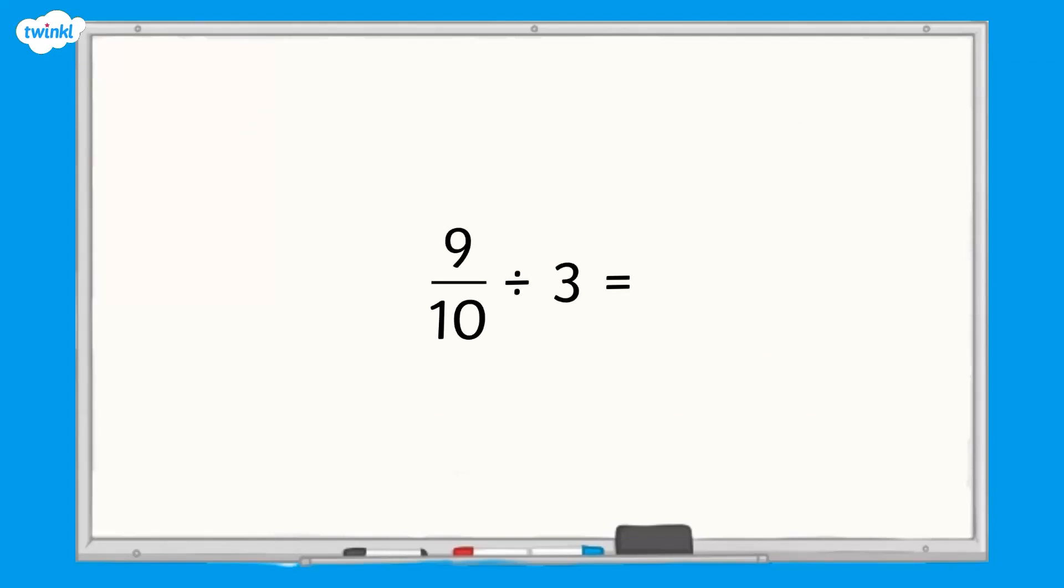There are a few steps to the process, so let's work through it together using the same calculation that we've just completed: 9 tenths divided by 3. Firstly, we need to change the integer, 3, into its equivalent fraction. 3 is equivalent to 3 wholes or 3 ones, so the denominator needs to be 1 and the numerator is 3.